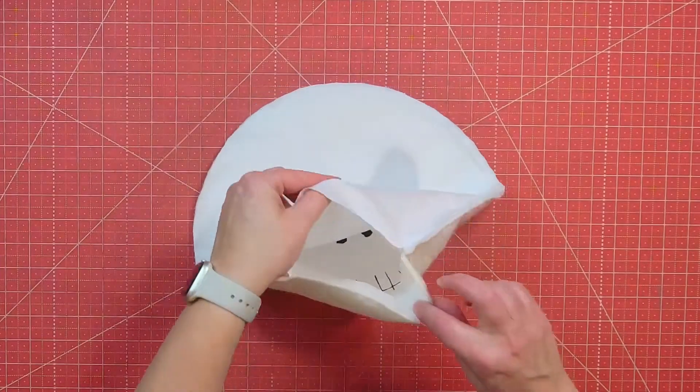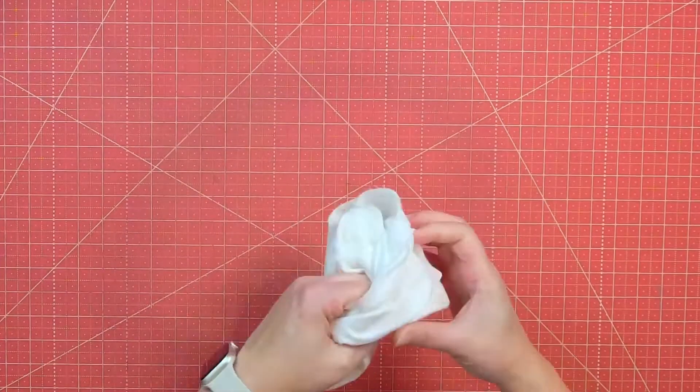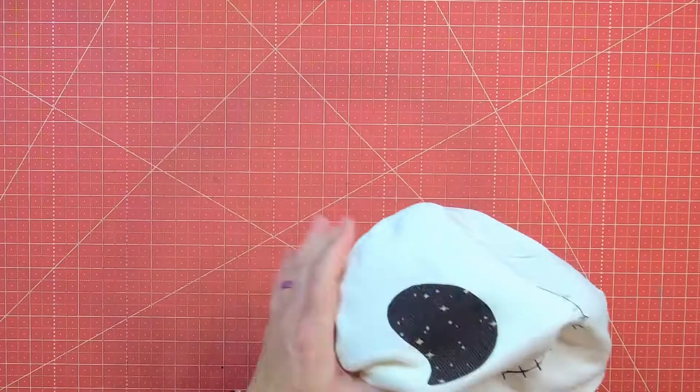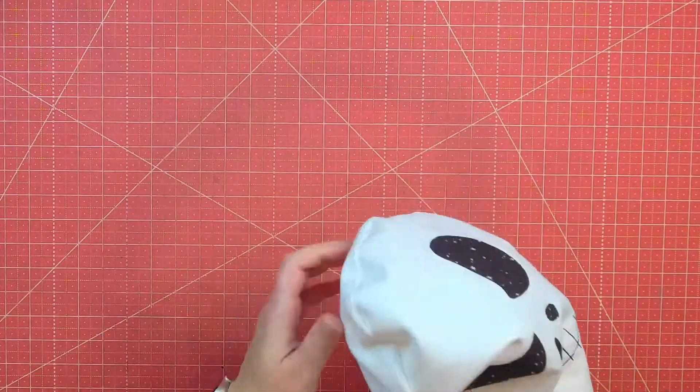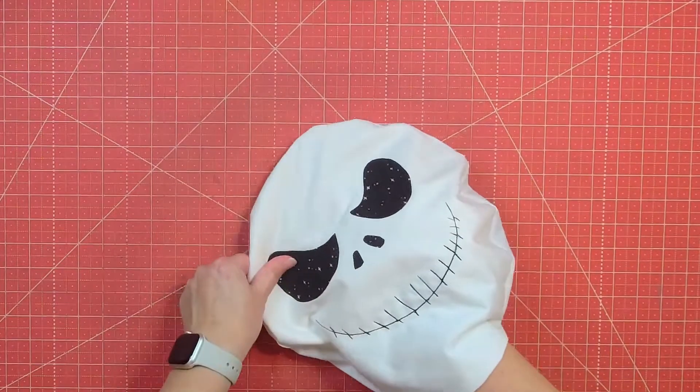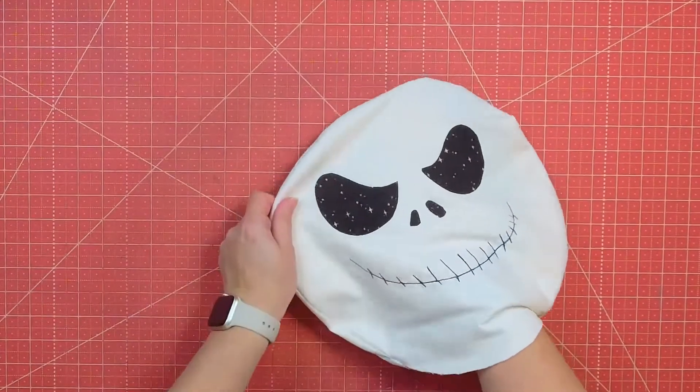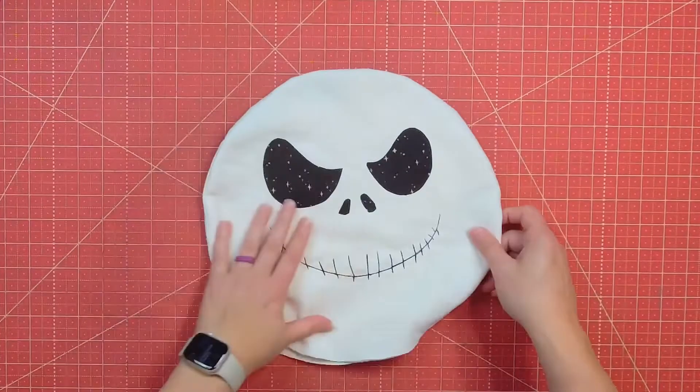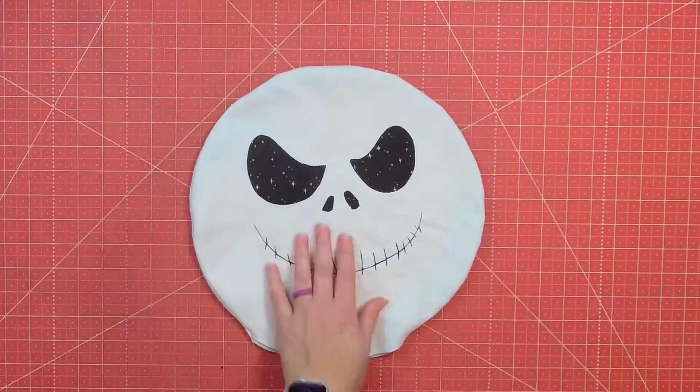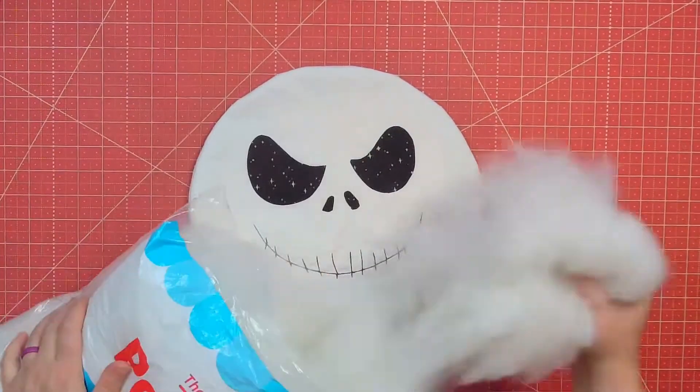So after sewing that quarter inch seam all the way around the pillow, leaving that open area, I can flip the pillow right side out and kind of see how it is turning out. And I can already see it is adorable. So I'm just going to press the seams with my finger to get it nice and round. And then we can start stuffing the pillow.